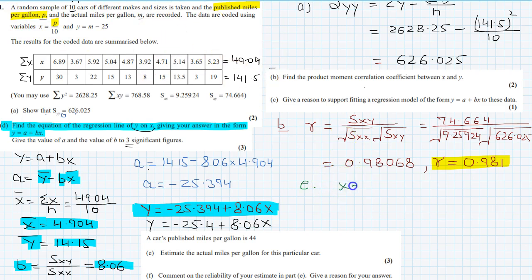So x is equal to 44 over 10, so x is equal to 4.4. Estimate the actual mile per gallon, and actual mile per gallon is m, so we have to calculate m.